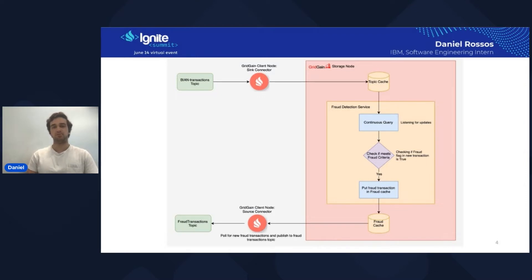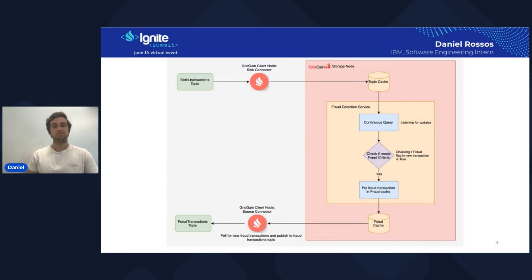From there, we have our continuous query running, which detects any new additions into the topic cache created for those buying messages. It then checks to see if there is a fraud flag set to yes or no on each message. If the message is fraudulent — that flag is set to yes — it creates an entry into the fraud cache. The final step in the pipeline is the Ignite source connector, which detects all changes on the fraud cache and produces those entries as messages to the fraud transaction topic back in Kafka. We can also create a REST API to query the messages inside those caches and display them on a sample web application.